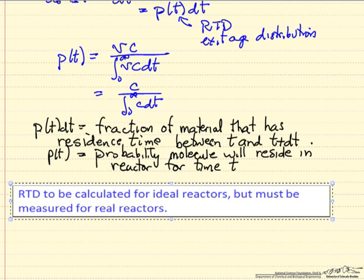Now we can calculate these residence time distributions, these probabilities, for ideal reactors, but we must measure them for real reactors using a tracer method like I just described.